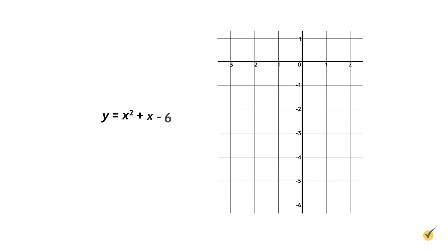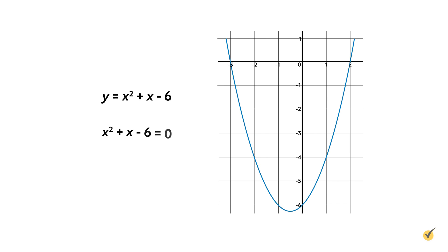Consider the graph for y equals x squared plus x minus six. We can use this graph to solve the equation x squared plus x minus six equals zero. Notice that y is replaced with zero, which indicates that we are solving for x by identifying the x-intercepts. The graph intersects the x-axis at the points negative three, zero and two, zero, so the solutions for x are negative three and two. There are two real rational solutions.